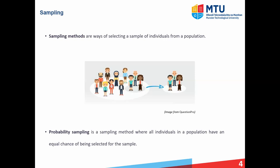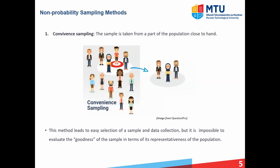The first non-probability sampling method is convenience sampling, where you take a sample that is convenient for you. Consider yourself as the researcher — you just take the three people nearest to you, so those people get into your sample. The advantage of this method is that it's easy to select your sample because you're picking individuals close at hand. The disadvantage is that we have to question how well that sample represents your population.